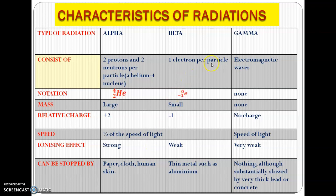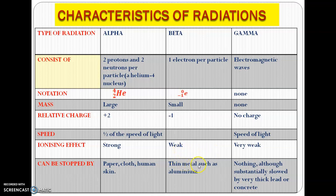Moving on to the beta particle: when a beta particle is released, what's released is actually one electron. The notation uses negative one, because that's the charge carried by an electron. The mass of this particle is very small and it has a relative charge of negative one. It has a very weak ionizing effect and can be stopped by a thin metal such as aluminium.